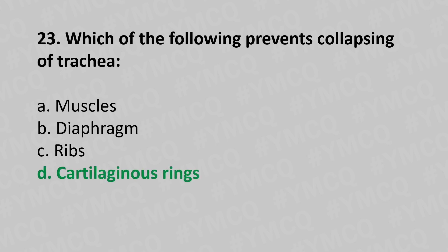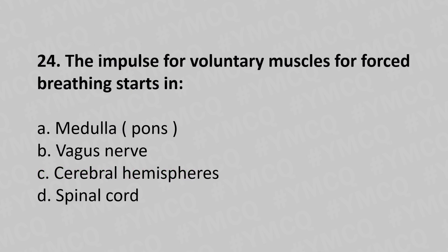Now let's move to question number twenty-four. The impulse of the voluntary muscles for forced breathing starts in: option a, medulla or pons; option b, vagus nerve; option c, cerebral hemisphere; option d, spinal cord. And the answer is option a, medulla or pons.